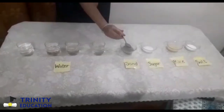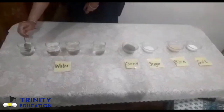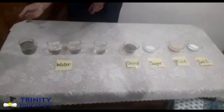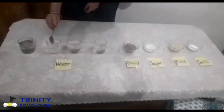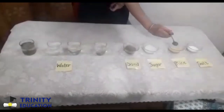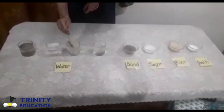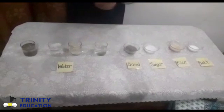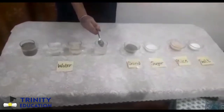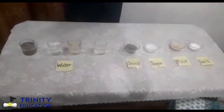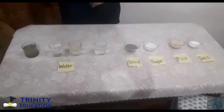Now add sand in the first glass of water, add sugar in the second glass of water, add rice in the third glass of water. Similarly, add salt in the fourth glass of water. Now stir all the glasses of water.